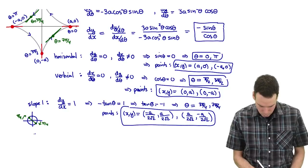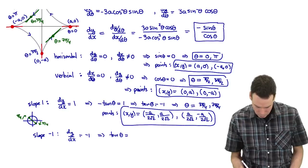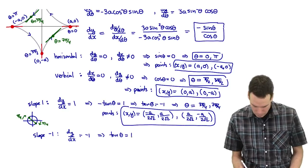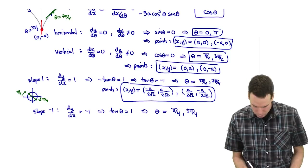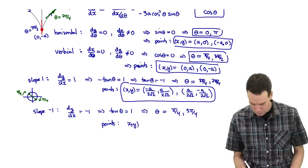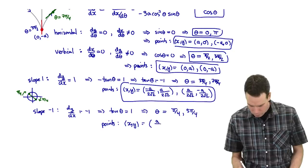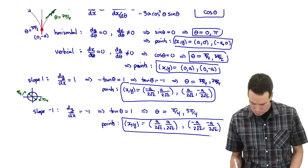When the slope is −1: dy/dx equals −1, which means the tangent function equals 1. That means theta equals π/4 or 5π/4. Plugging those values back into the original parametric equations, the (x, y) values are (a/(2√2), a/(2√2)) and (−a/(2√2), −a/(2√2)).